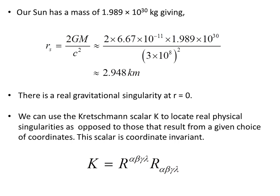Our sun has a mass of 1.989 times 10 to the 30 kg, and the Schwarzschild radius for this object, if we substitute in the values, the gravitational constant and the mass of the sun, and the speed of light 3 times 10 to the 8 m per second, we get a value of approximately 2.948 km.